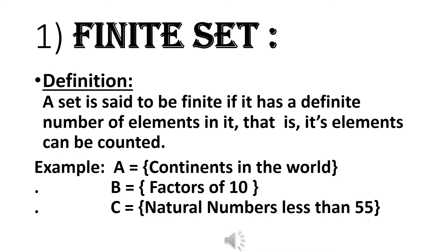Finite set: A set is said to be finite if it has a definite number of elements in it; that is, its elements can be counted. Example A: Continents in the world — there are only 7 continents, so it is a finite set. Example B: Factors of 10 are 1, 2, 5, and 10 — there are 4 factors, so it is a finite set. Example C: Natural numbers less than 55 — it has a limit of 55, so it is a finite set.